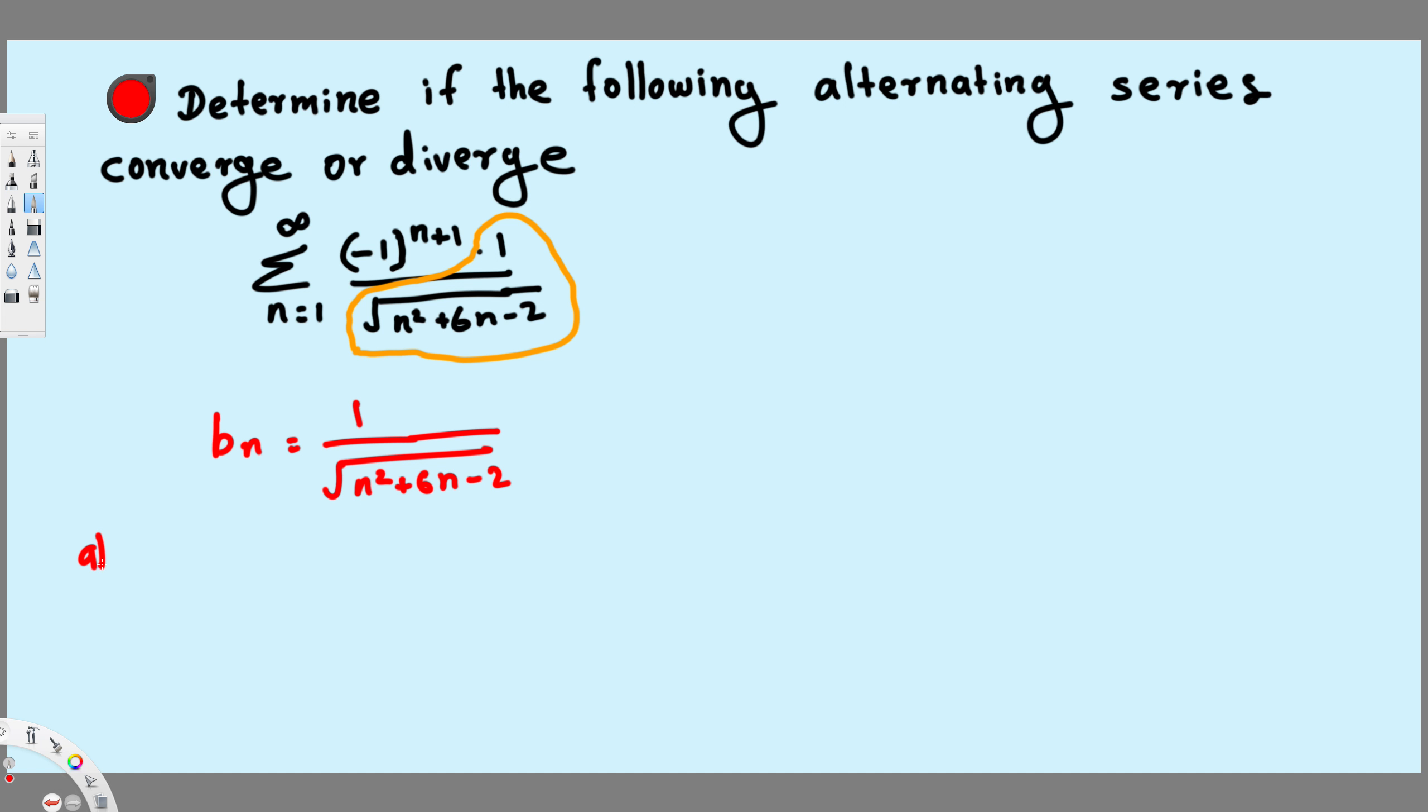First condition we have to check whether it is decreasing, and the limit should also be equal to 0. If it satisfies both conditions it converges. If it doesn't satisfy any of those conditions it diverges.